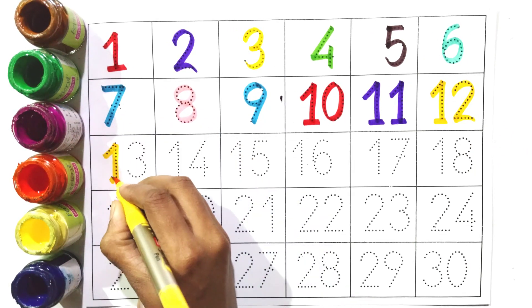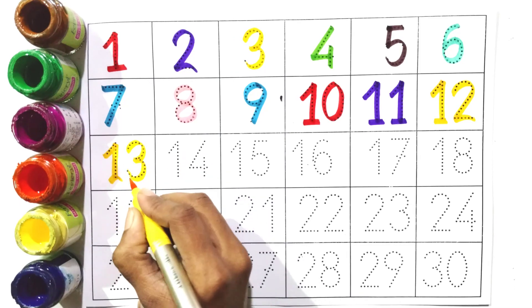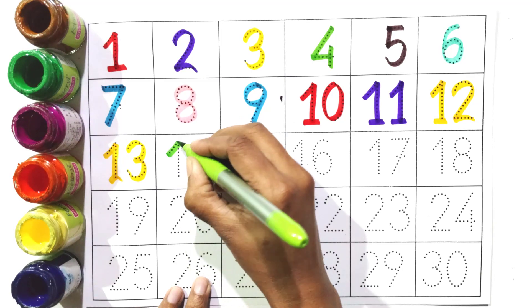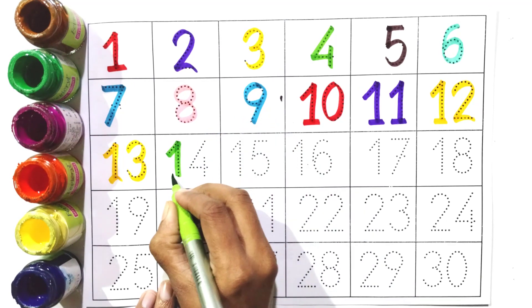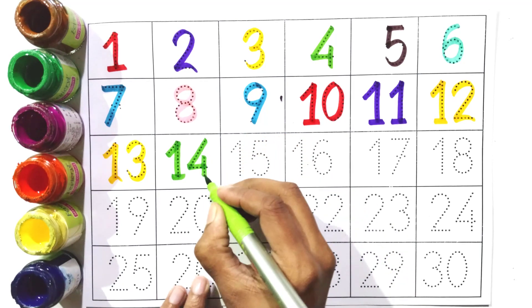One and three, thirteen. One and four, fourteen.